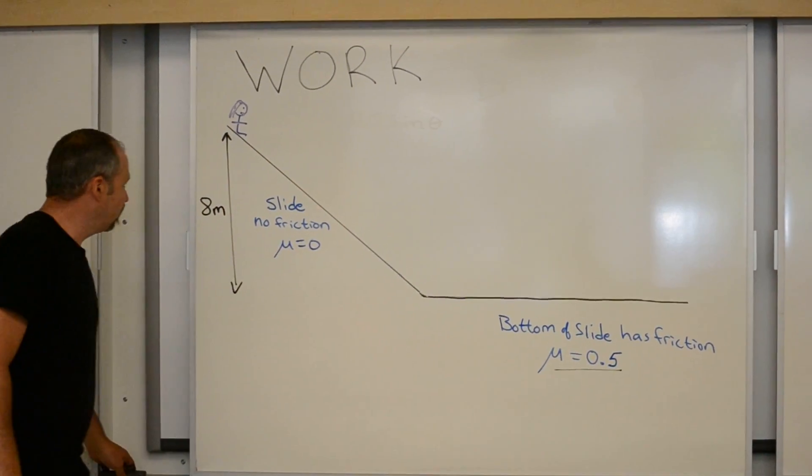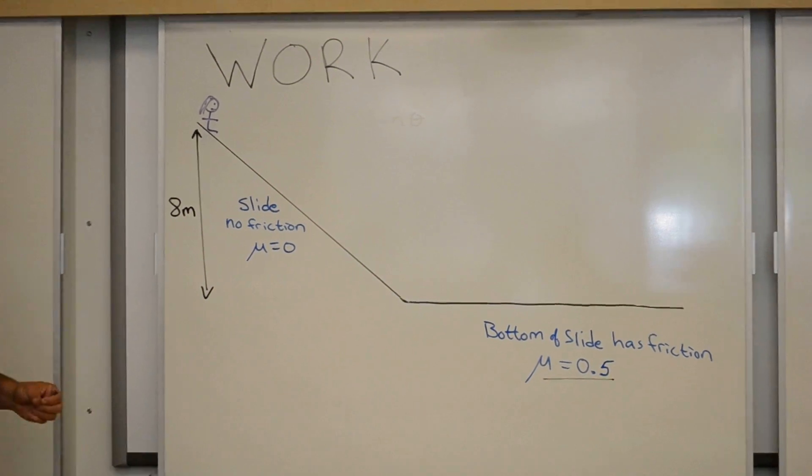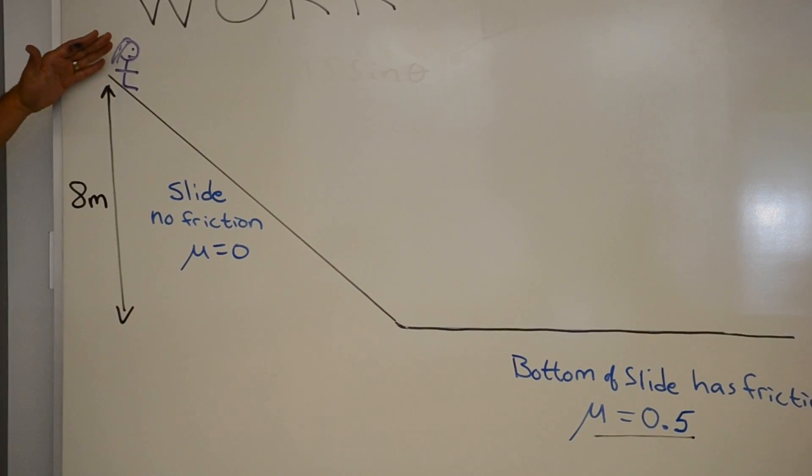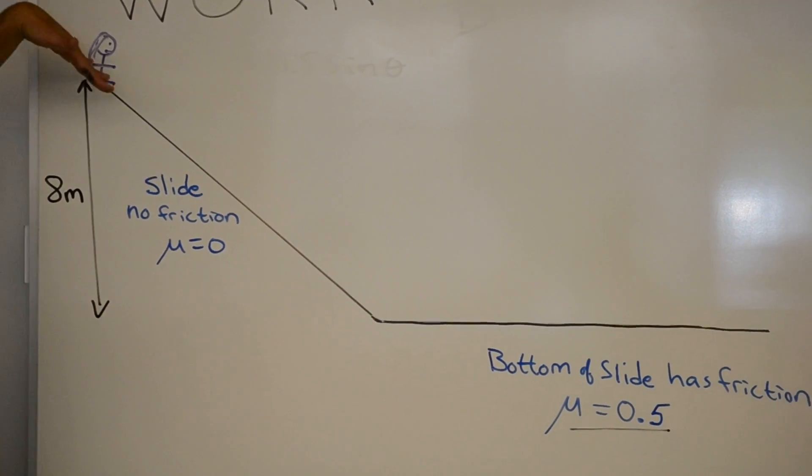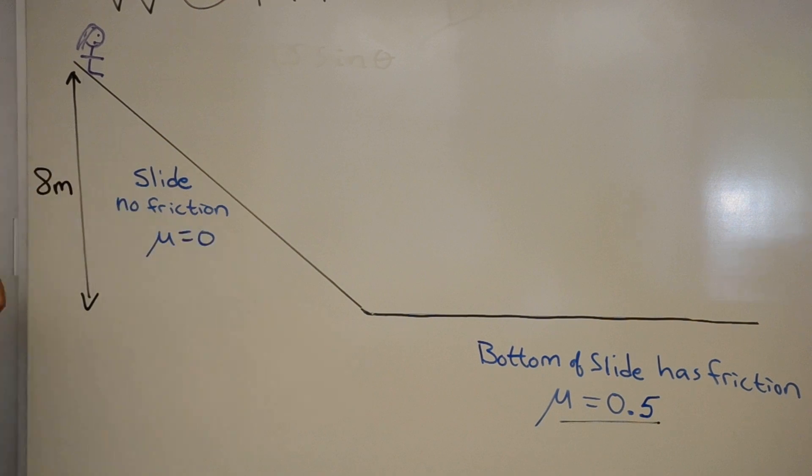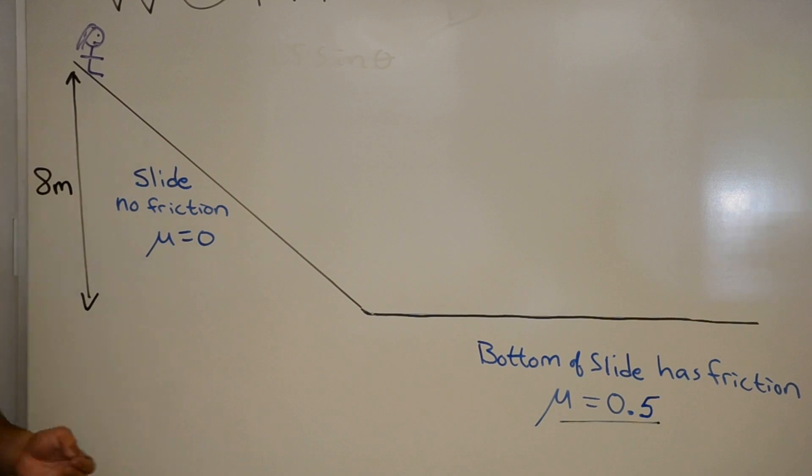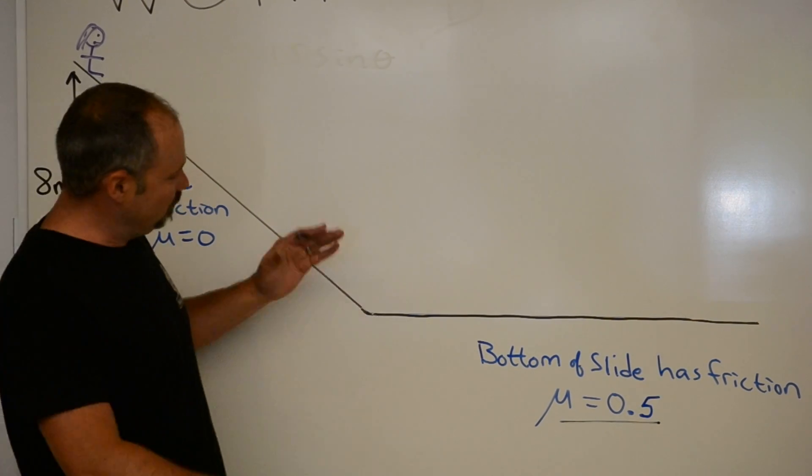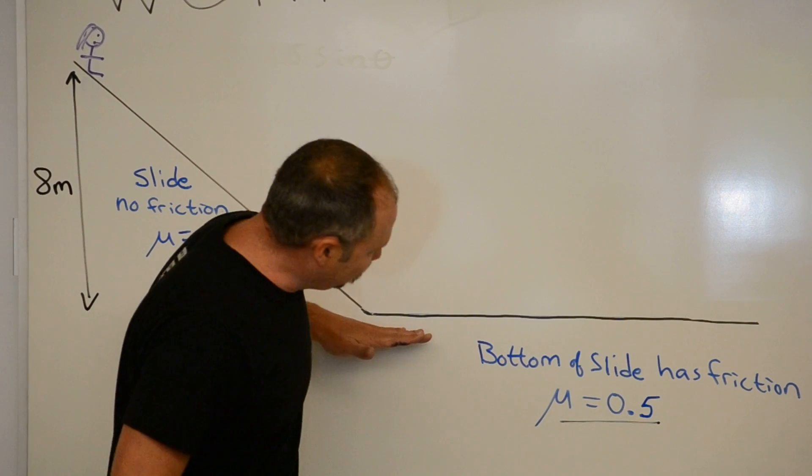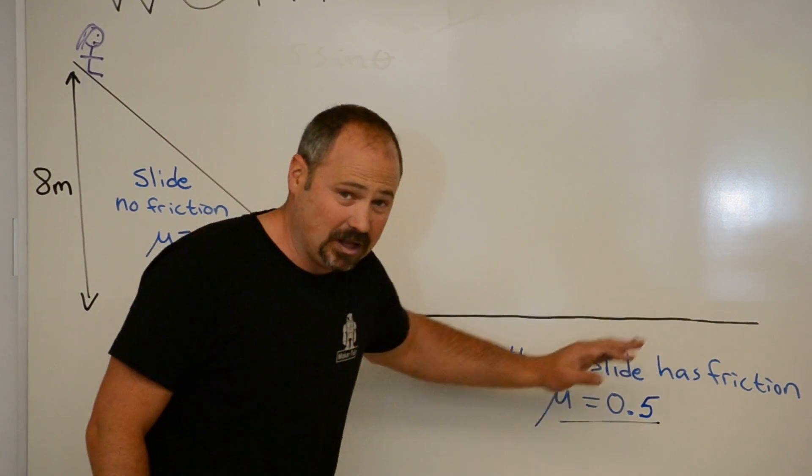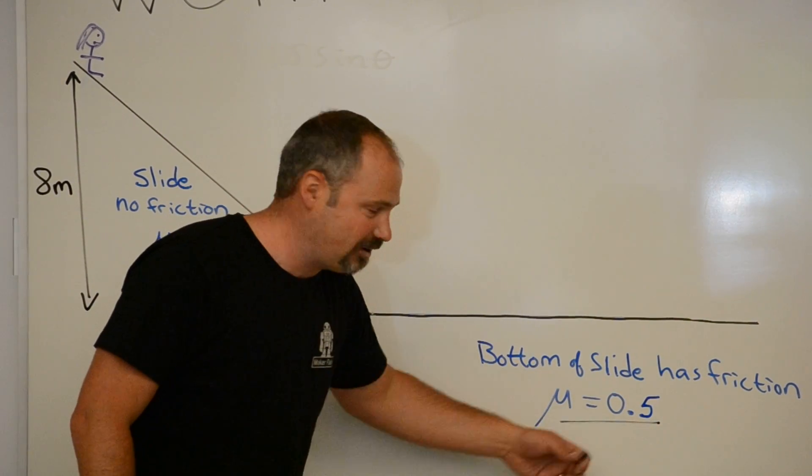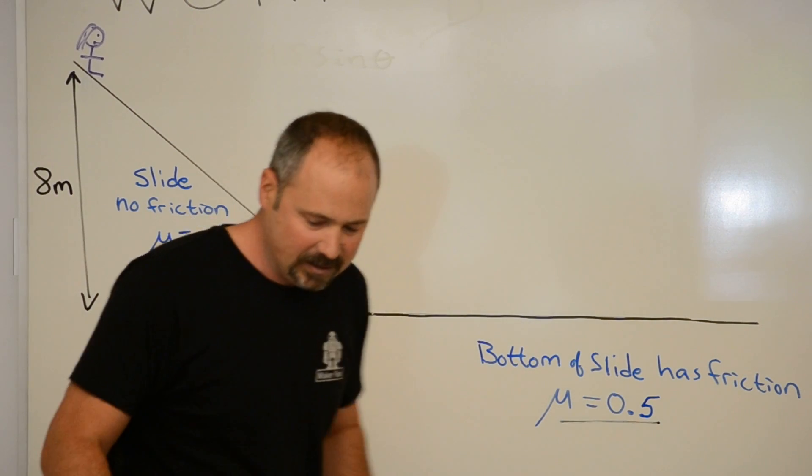So, here I have a girl on a slide and she's, say the slide is eight meters high. This downhill sliding portion has no friction. Maybe she has a cardboard box under her and reduces the friction to almost zero. But then she loses the box at the bottom and there is friction on the bottom part of the slide. And the coefficient of friction down here is 0.5.